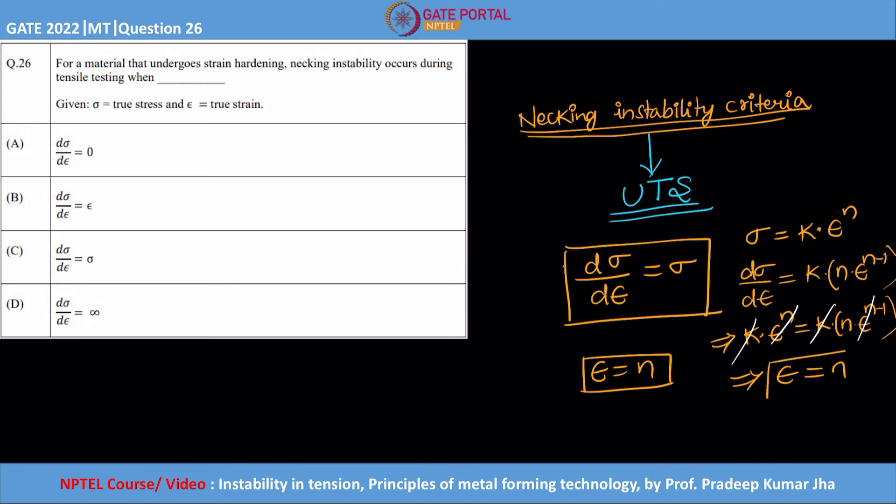one. And if you just reciprocate ε, this is what you'll be getting. So this is one more way of writing the same instability criteria. Okay, so the option is C: dσ/dε is equal to σ